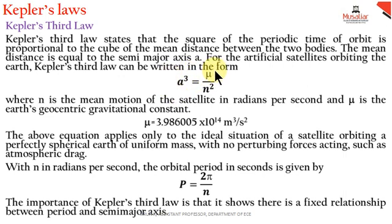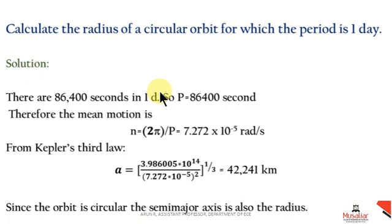μ is calculated as 3.986005 × 10¹⁴. From that equation, the period can be derived as P = 2π / n. This equation can be utilized to solve this problem. That is, for one day we have to calculate the radius of circular orbit.